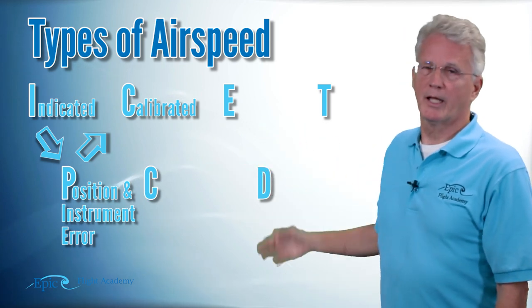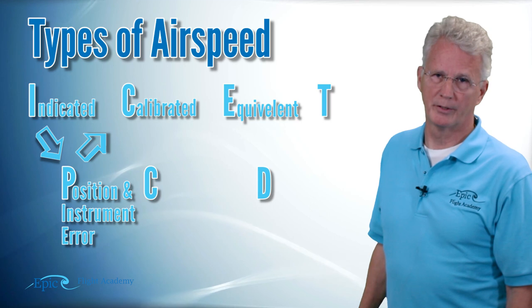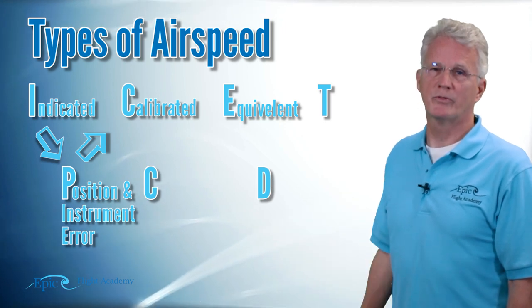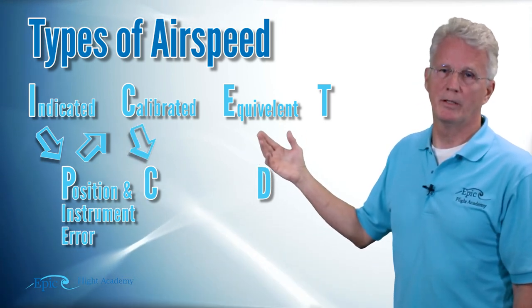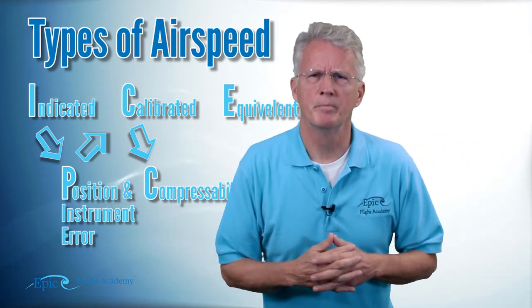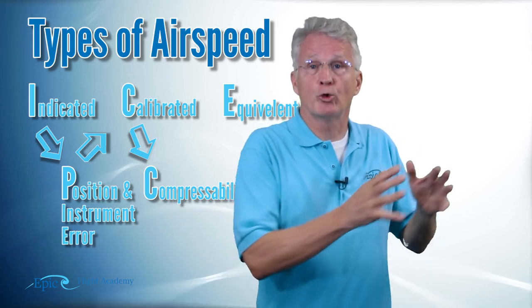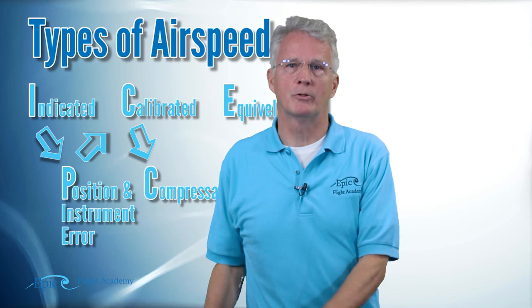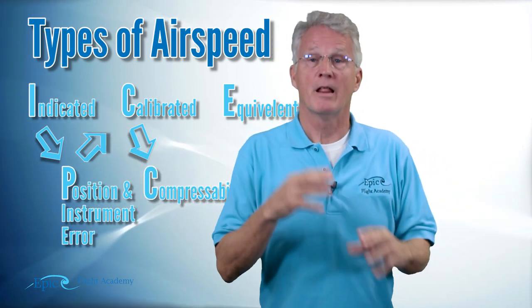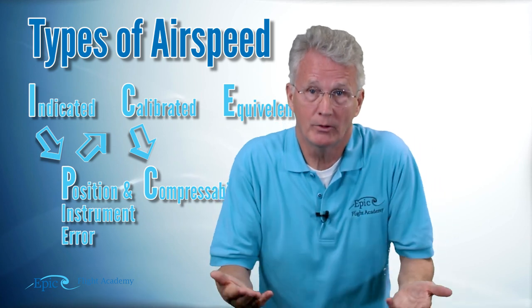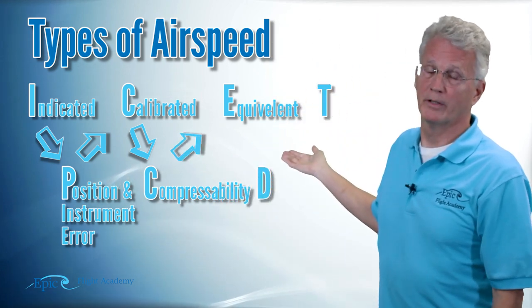From calibrated airspeed we go to the capital letter E, which stands for equivalent. We take a little detour through the letter C — from calibrated airspeed we take a correction for compressibility to get to equivalent airspeed. At speeds approaching 200 knots and greater, there are so many air molecules trying to jam themselves into the pitot tube that the air starts to compress a little bit. That introduces a compressibility error. When that compressibility error is accounted for, we get equivalent airspeed.